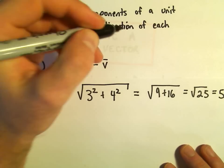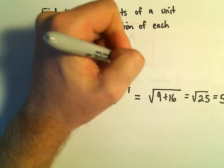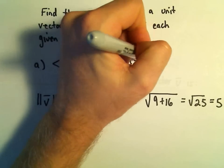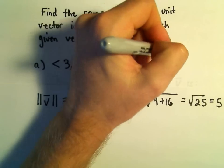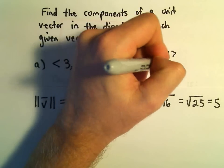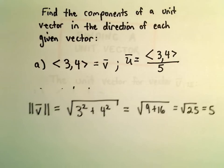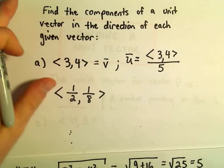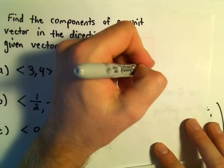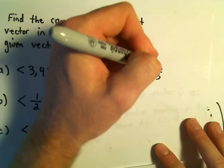The unit vector would be this vector with components 3, 4, divided by 5. Remember, we can think of this as multiplying by a scalar - we're just multiplying by 1/5.